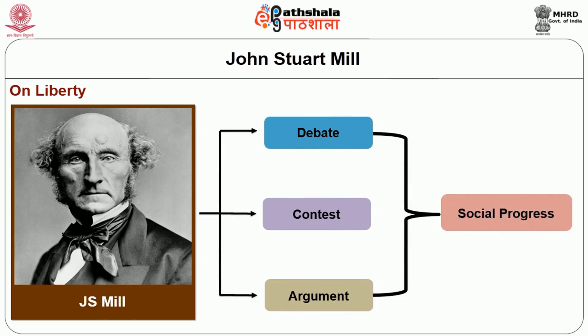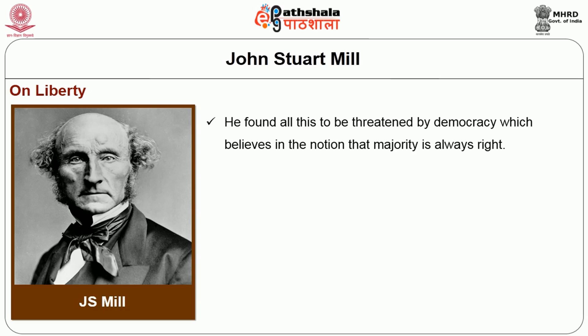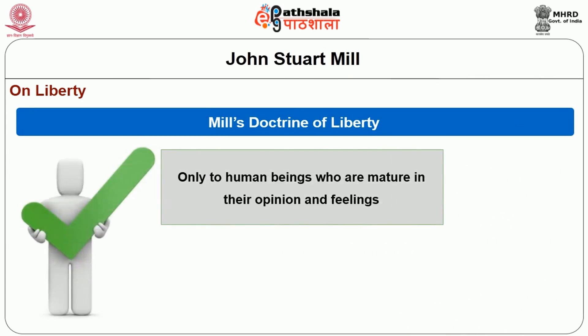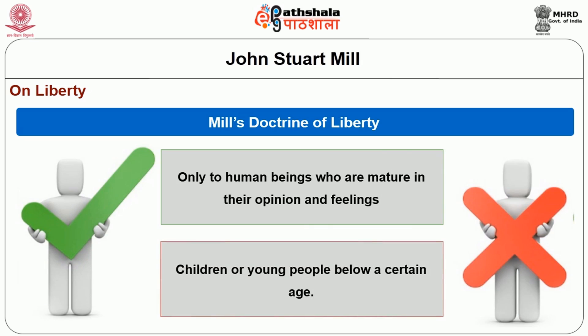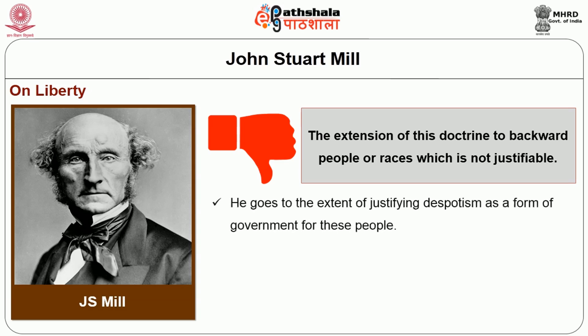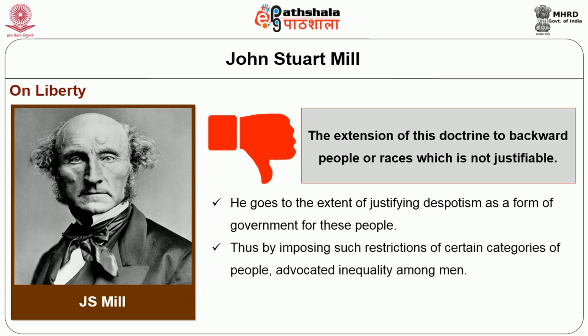He however found all this to be threatened by democracy, which believes in the notion that the majority is always right. Mill opines that even governments, majorities, and social aristocrats are not infallible, as even they can be wrong. Mill's doctrine of liberty is however applicable only to human beings who are mature in their opinion and feelings, and not to children or young people below a certain age. He also denied the extension of this doctrine to backward people or races, and even goes to the extent of justifying despotism as a form of government for these people. Mill, by imposing such restrictions on certain categories of people, advocated inequality among men, as some men were likely to emerge as superior to others.